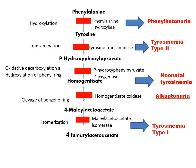To summarize all the enzyme deficiency disorders: deficiency of hydroxylase at step 1 leads to phenylketonuria; deficiency of transaminase at step 2 leads to tyrosinemia type 2; deficiency of dioxygenase at step 3 leads to neonatal tyrosinemia; deficiency of oxidase at step 4 leads to alkaptonuria; deficiency of isomerase at step 5 leads to tyrosinemia type 1.